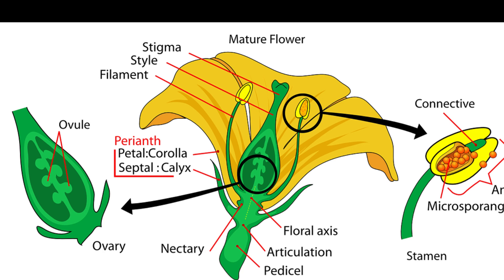2. Petals — corolla: the brightly colored whorl located inside the sepals, designed to attract pollinators such as insects and birds.